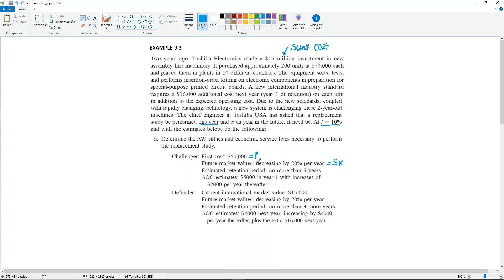Now here they do not give us the actual amounts. We would have to compute them by decreasing the value, the first cost, 20% per year. We will calculate that in a minute. So all of these will be your salvage values in years 1, 2, 3, and so forth, up to the retention period, which is no more than five years. This would be your largest K. So it would go future market values from 1 through 5. Then you have the annual operating cost estimates. You have $5,000 in year 1 with increases of $2,000 per year thereafter.